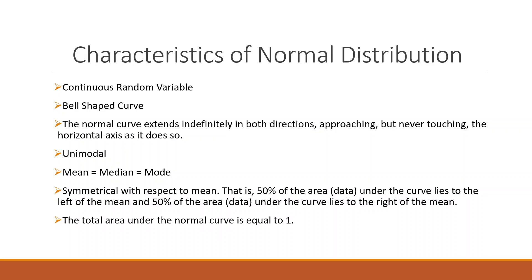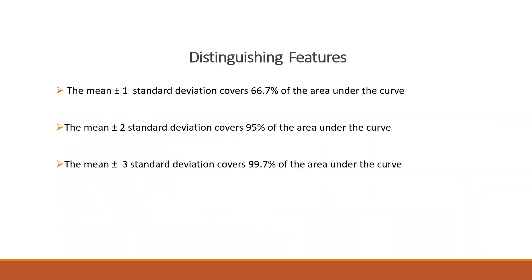The normal distribution is unimodal, and mean equals median equals mode. It is symmetrical with respect to the mean: 50% of the area lies to the left and 50% to the right of the mean. The total area under the normal curve always equals 1. A key feature is the empirical rule: mean ± 1 standard deviation covers 68% of data, mean ± 2 SD covers 95%, and mean ± 3 SD covers 99.7%.